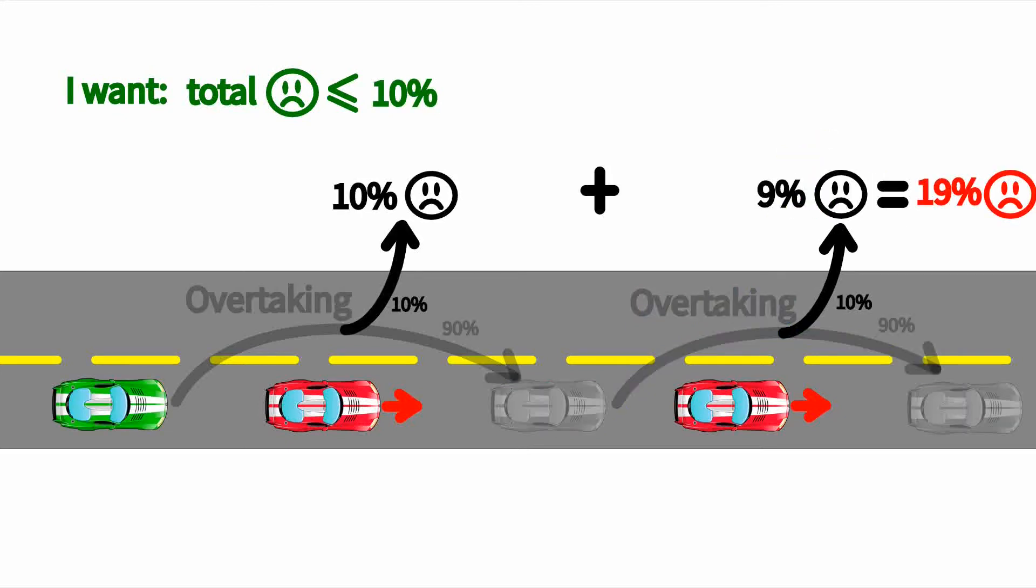However, this policy actually has a 19% probability of crashing over the two maneuvers with 10% on the first overtake and 9% on the second overtake, violating the overall constraint on the probability of crashing.